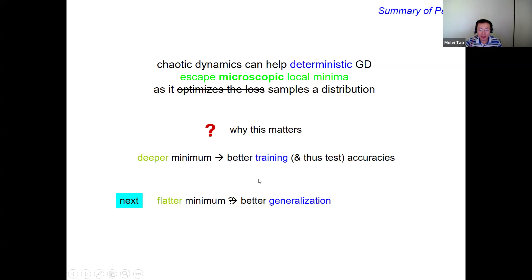Moving on, I want to emphasize more on the test accuracy aspect — more precisely the generalization aspect. It's a very popular belief that flat minimizers actually generalize better. But this is a statement that is too general; it's actually not true in certain situations. What I want to say is something completely rigorous: if you use a larger learning rate, then you can actually get a minimizer that is flatter.